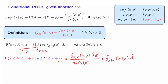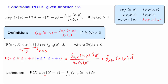Now that we have an intuitive interpretation of the conditional PDF, we can also use it to calculate conditional probabilities of more general events, not just intervals. In general, for continuous random variables, we can find the probability that X belongs to a certain set by integrating a PDF over that set. Because here we're dealing with a conditional situation where we're given the value of Y, we use the conditional PDF instead of the true PDF, and this way we calculate the conditional probability.